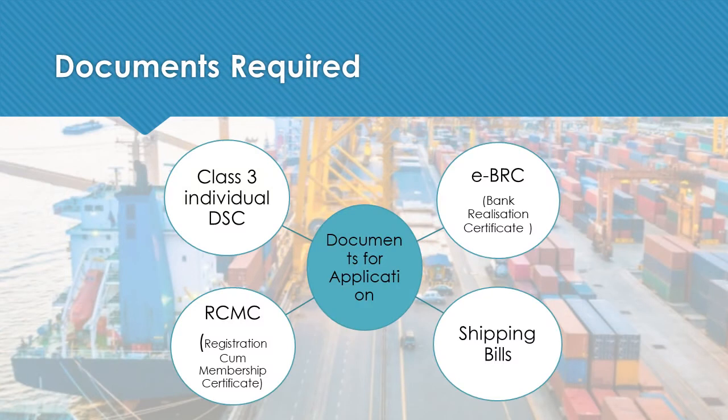For claiming benefits under this scheme, as an organization you require four primary documents. First, a Class 3 individual digital signature certificate. Second, you need to be a member of an Export Council, providing the Registration cum Membership Certificate. For each transaction, the remaining two documents are the shipping bill and the Electronic Bank Realization Certificate, that is the EBRC.